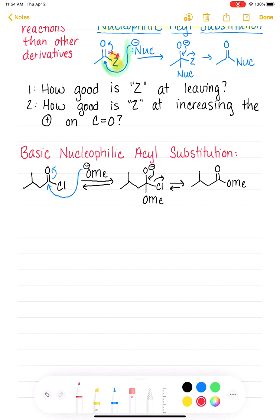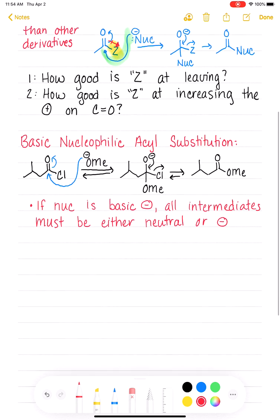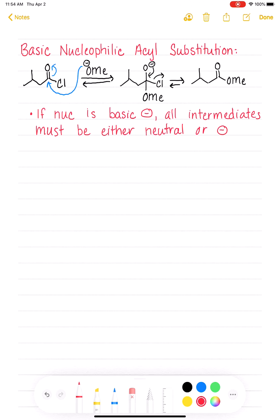As a good rule of thumb, when you are operating under basic conditions, so if the nucleophile is basic, and you'll know that it's basic because it will have a formal full-on negative charge, throughout your mechanism, all of your intermediates must be either neutral in terms of their charge or also have a negative formal charge. But you can't have any positively charged intermediates at all in the basic nucleophilic mechanism.